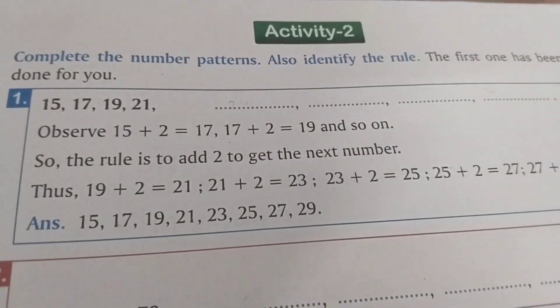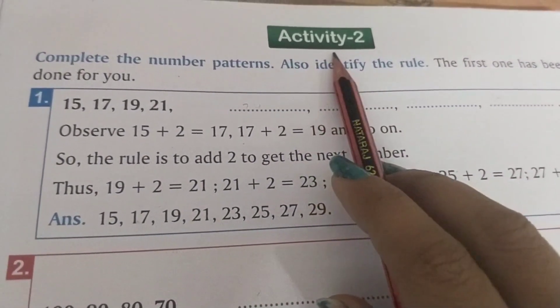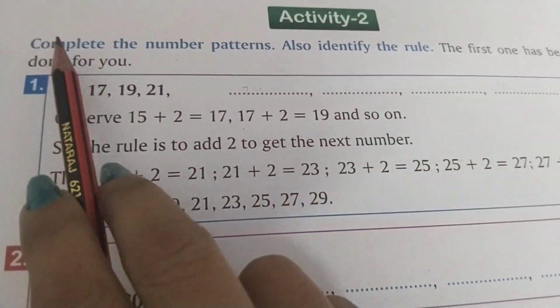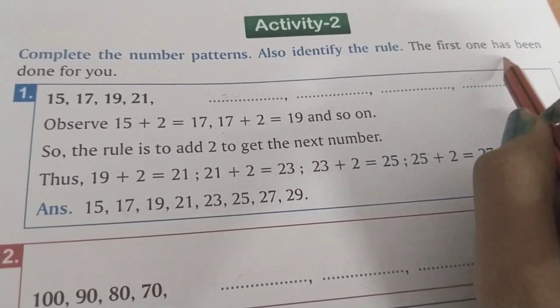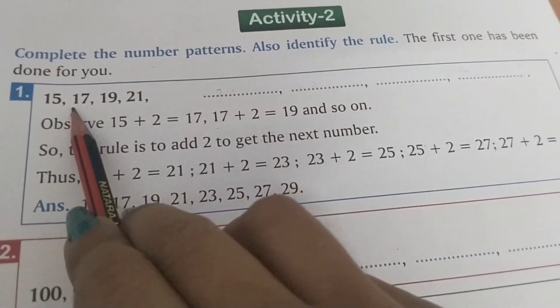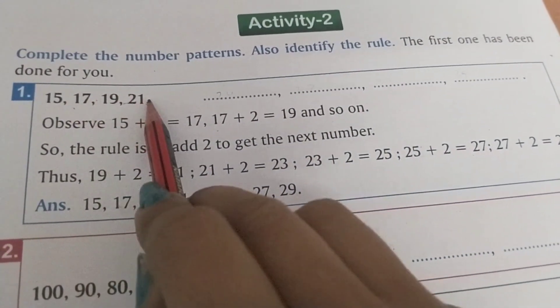Hey everyone, welcome back to my channel. In today's video I'm going to share the answer key of Activity 2: Complete the number patterns, also identify the rules. The first one has been done for you: 15, 17, 19, 21.